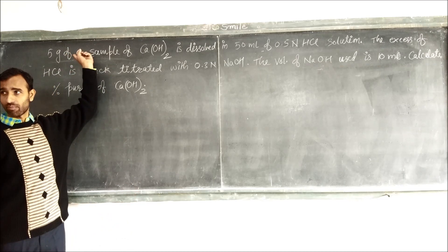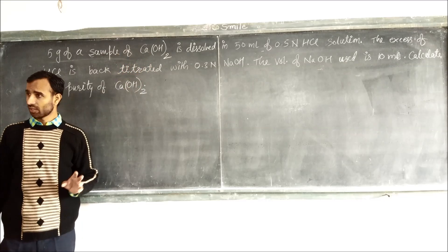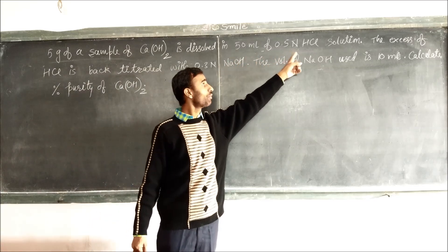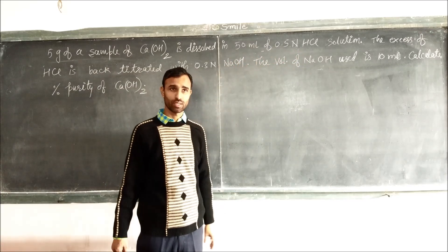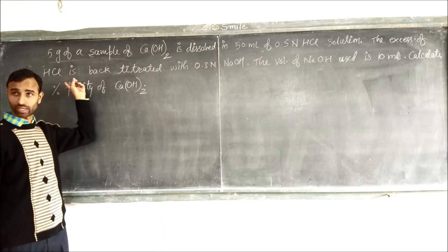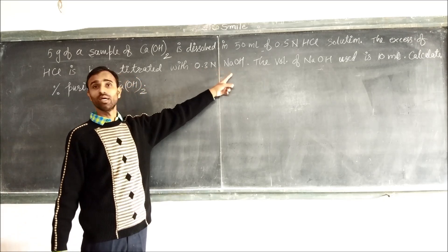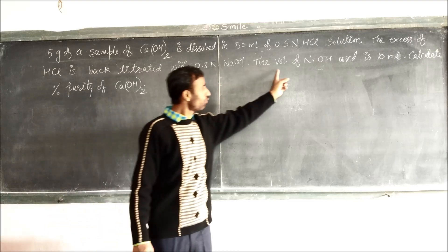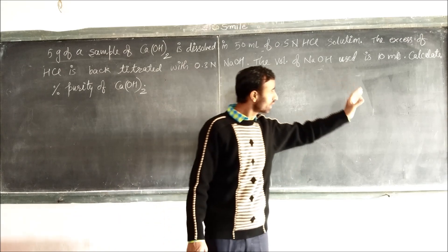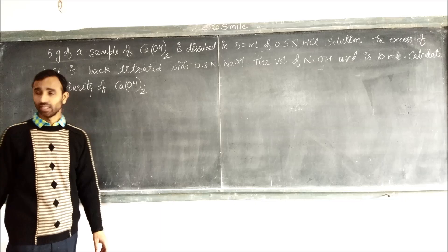So the question is: we have 5 gram of a sample of calcium hydroxide dissolved in 50 ml of 0.5 normal HCl solution. The excess of HCl, means remaining amount of HCl, is back titrated with 0.3 normal NaOH.